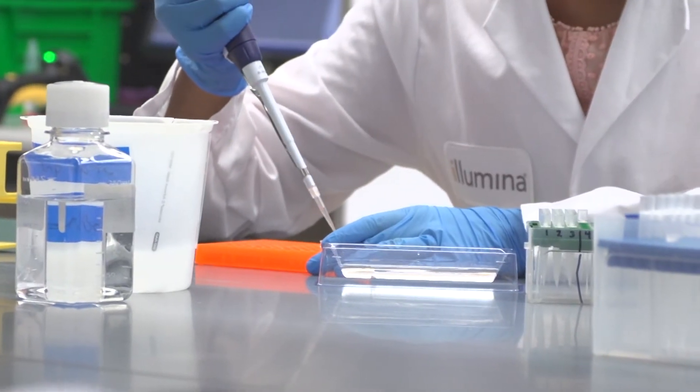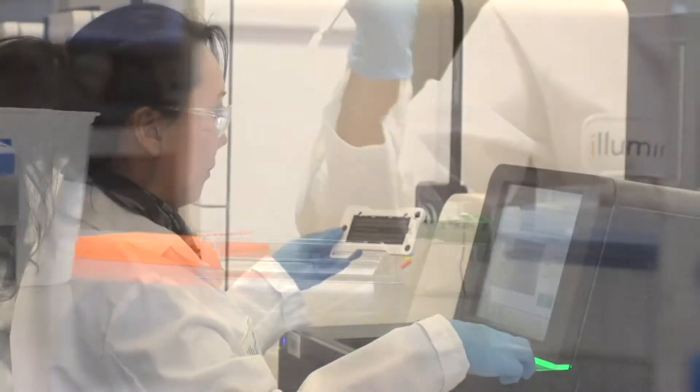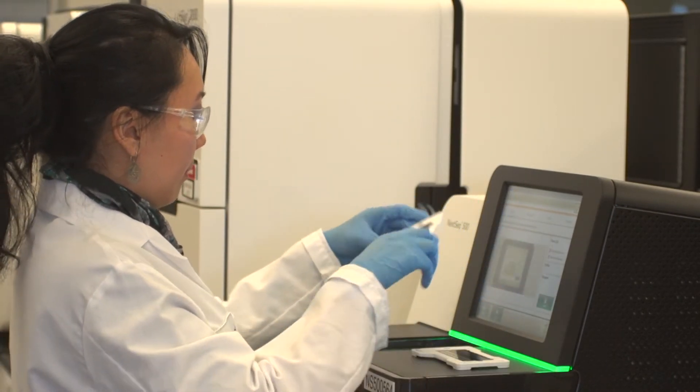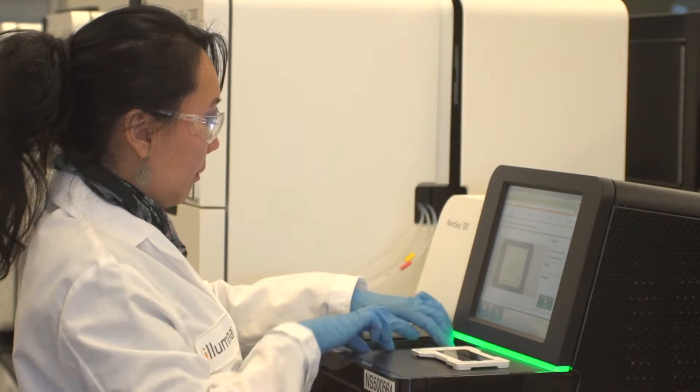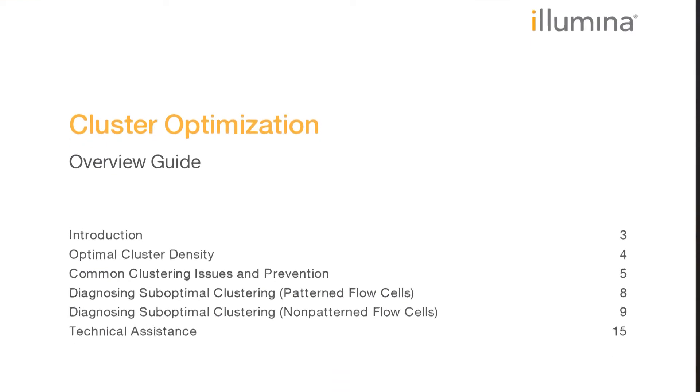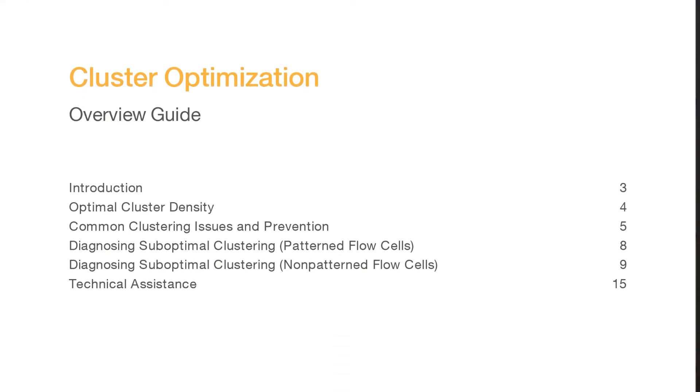Achieving optimal cluster density for your sequencing runs is the first step in maximizing the output and efficiency of your Illumina sequencing instrument. I'm Tim Gilmartin, a staff field application scientist with Illumina. And I'm Michelle Yeh, a staff technical application scientist with Illumina. In this video, we will discuss optimal cluster density and how over and under clustering can affect your sequencing data. We will then examine common clustering issues and ways to prevent them. Please use the cluster optimization overview guide found on the Illumina Support website as the official cluster optimization resource.